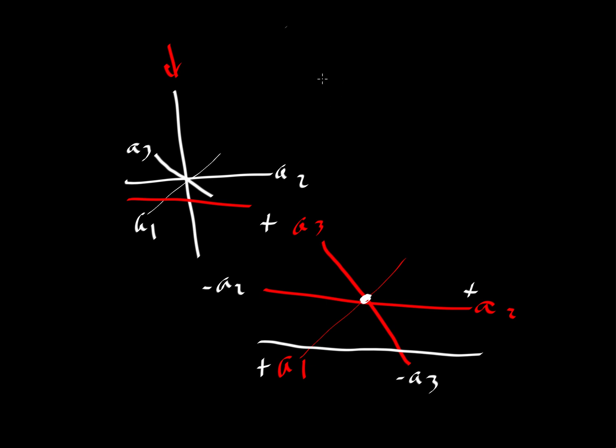So what would the intercepts be? We would have a 1A1 and then an infinity A2, because it's not hitting the A2 axis, it's parallel, and then a minus 1A3, and then an infinity C. So our intercepts are 1, infinity, minus 1, infinity.